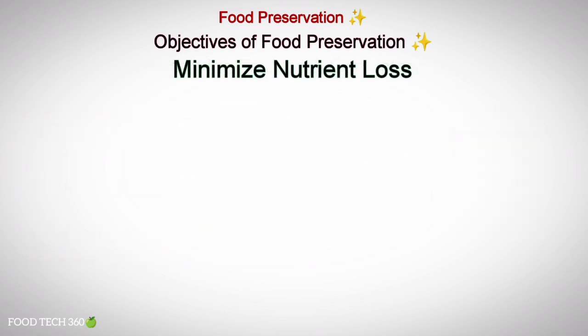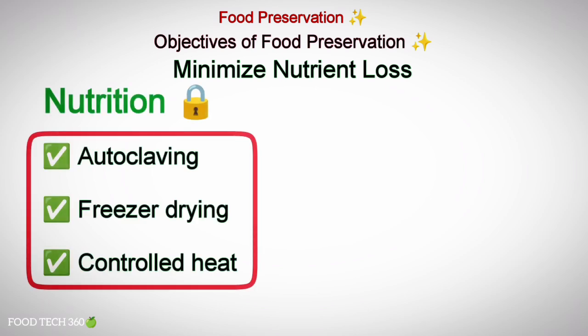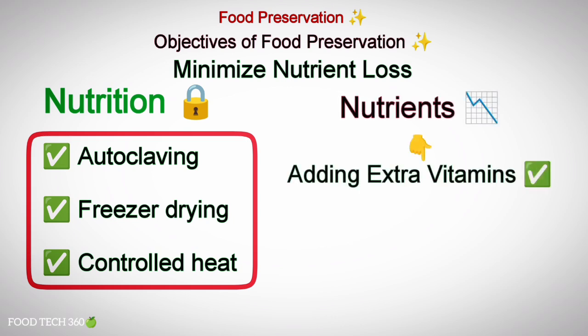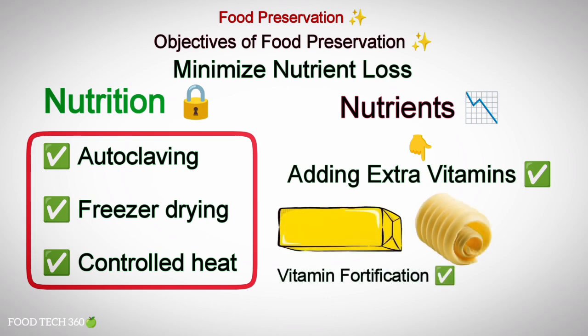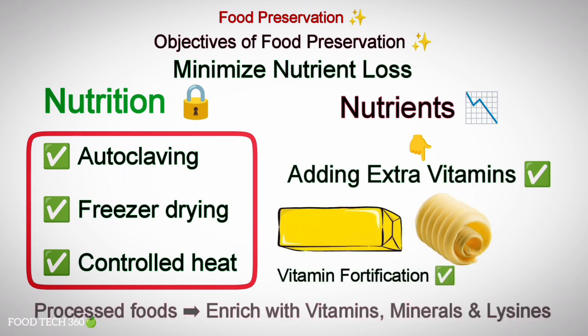Another objective is to minimize nutrient loss. Nutrition is better retained by controlled processing conditions such as autoclaving, freeze drying and controlled heat. Nutrient loss due to processing is managed by adding extra vitamins. Processed margarine, butter, etc. are fortified with vitamins. Other processed foods are often enriched with vitamins, minerals and other nutrients.